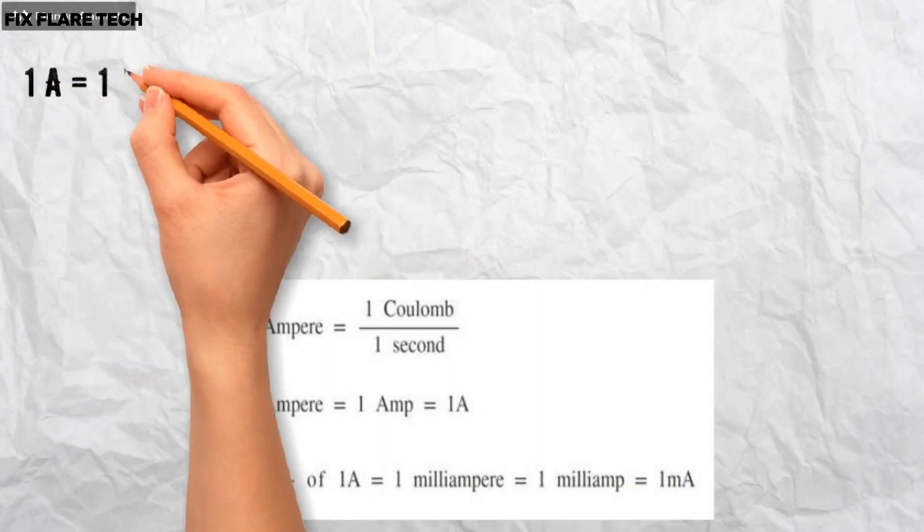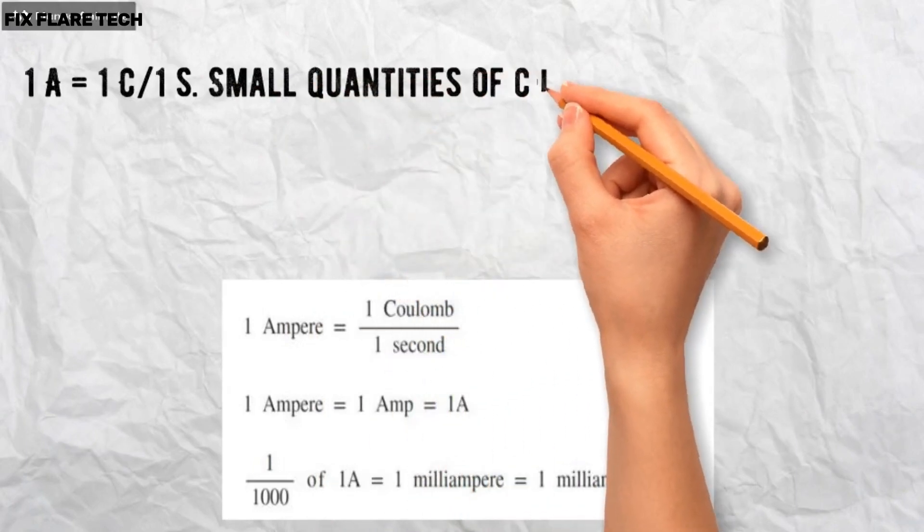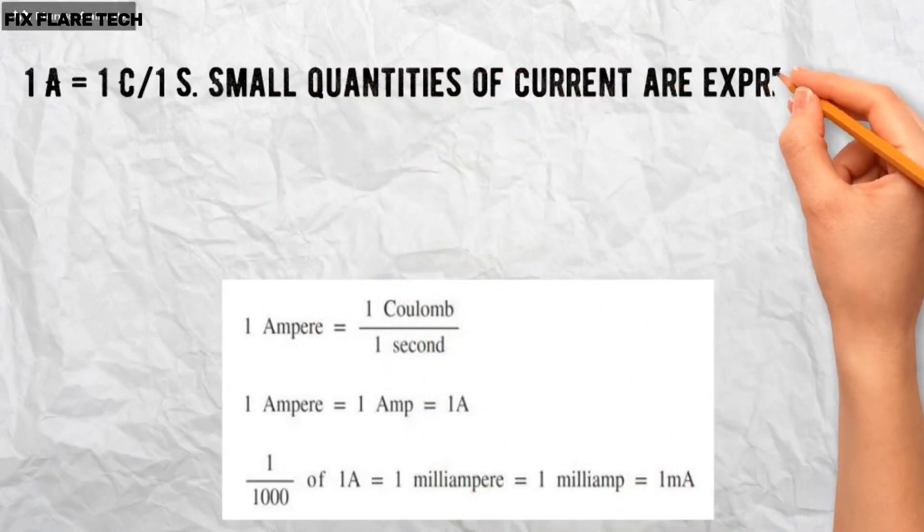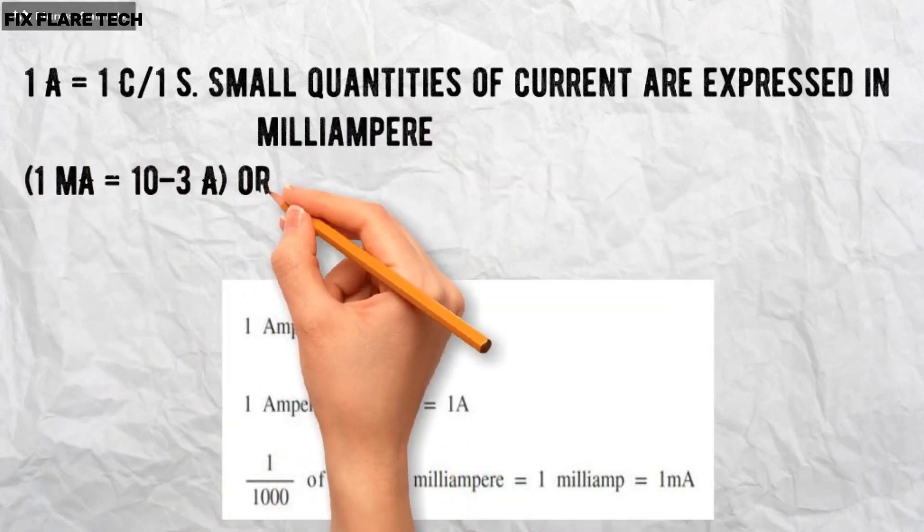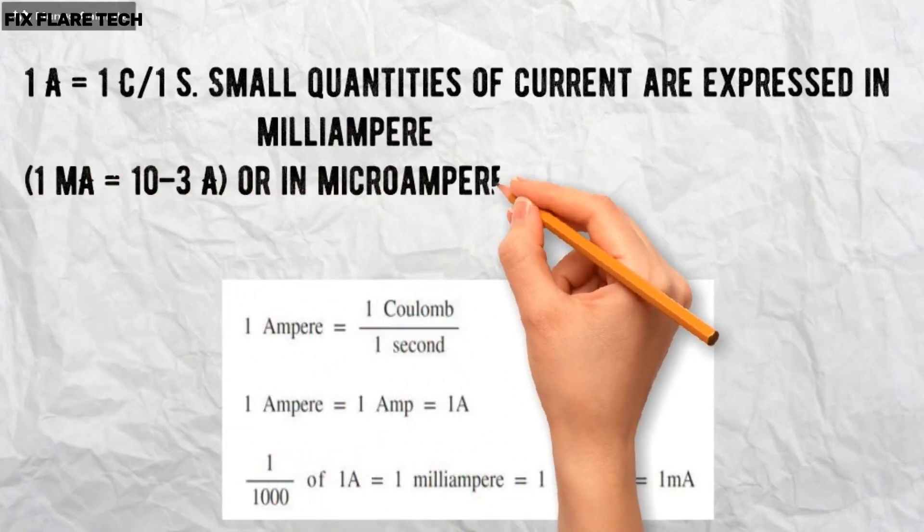Small quantities of current are expressed in milliampere: 1 mA = 10^-3 A, or in microampere: 1 μA = 10^-6 A.